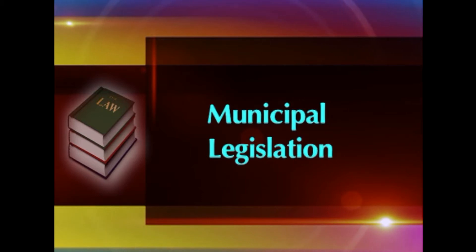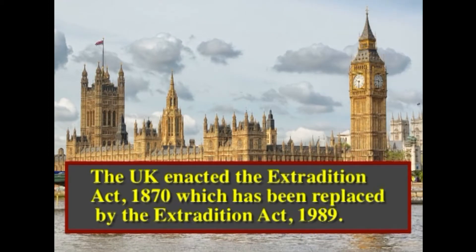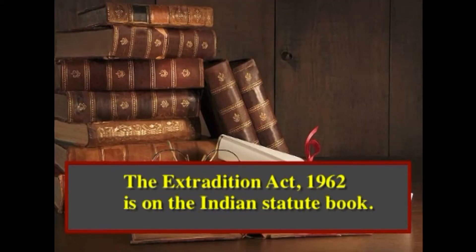Municipal legislation: Various states have enacted extradition laws which may lay down the procedure and a list of extraditable crimes. Belgium was the first country which enacted such legislation in 1833. The UK enacted the Extradition Act 1870, which has been replaced by the Extradition Act 1989. The Extradition Act 1903 was modeled on the British enactment. The Extradition Act 1962 is on the Indian statute book. Grant of extradition and procedure are generally matters of national law and therefore there is no uniformity in such laws, but certain principles are now established.